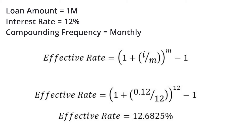Using the formula for the effective annual rate of return, we have computed that our effective rate of return will be 12.6825 percent. So if you invest 1 million into an account which pays interest monthly and you allow it to stay in the account, by the end of the year you will earn slightly more than 12 percent — that is 12.6825 percent.